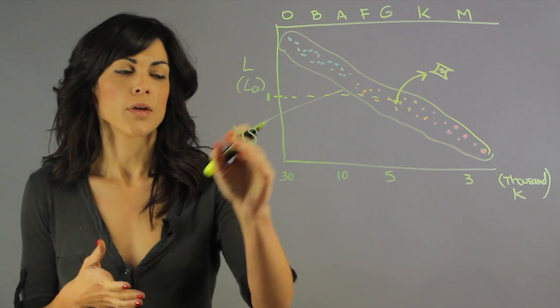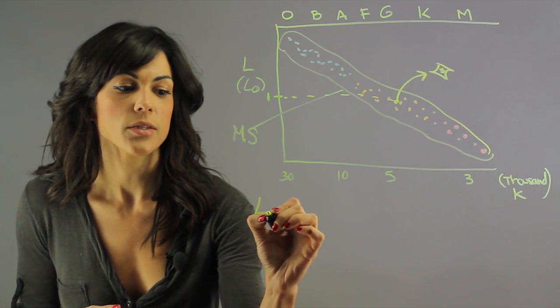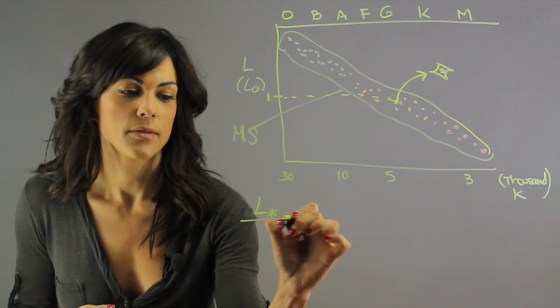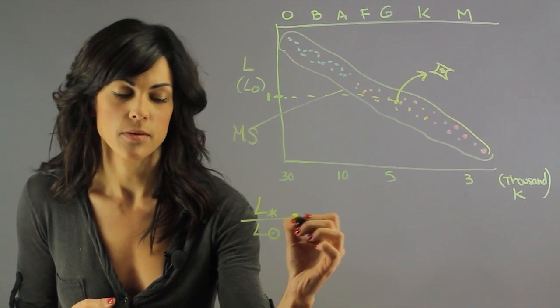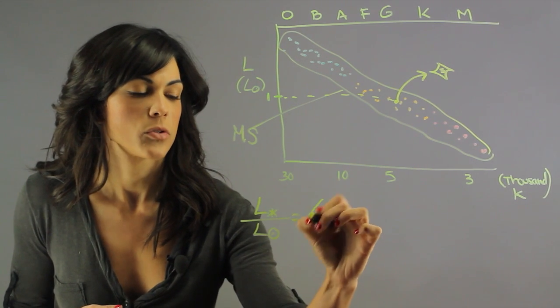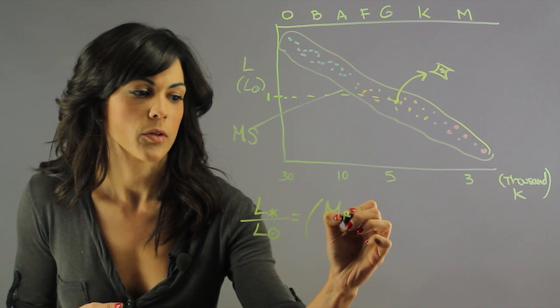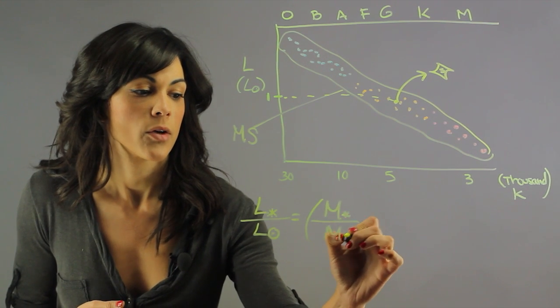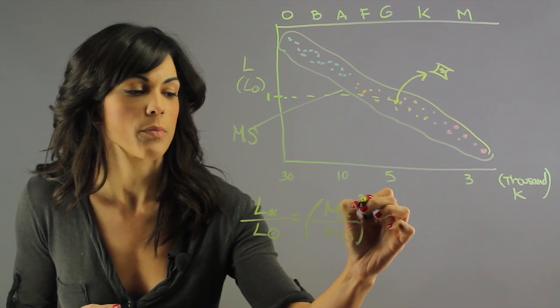One of the mathematical models for this is that the luminosity of the star that you are looking at divided by the luminosity of the sun is equal to the mass of the star that you are looking at divided by the mass of the sun to the 3.5 power.